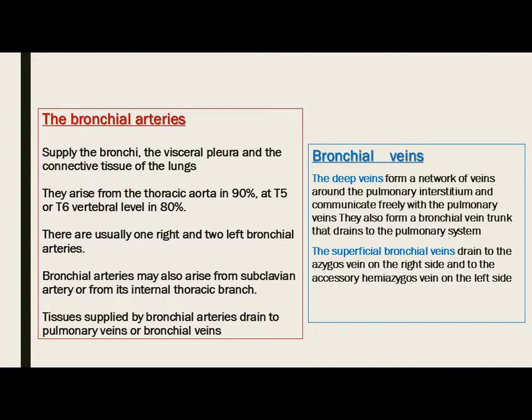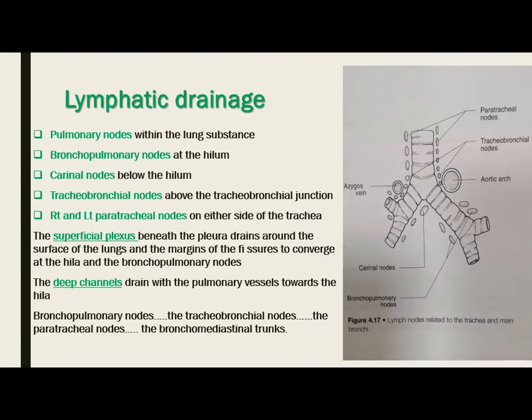The bronchial veins have two networks: the deep veins and the superficial bronchial veins. The deep veins form a network around the pulmonary interstitium, communicate freely with the pulmonary veins, and form a bronchial venous trunk that drains to the pulmonary system. The superficial bronchial veins drain to the azygous on the right side and to the accessory hemiazygous on the left side.